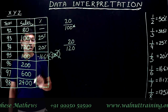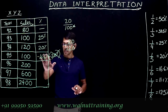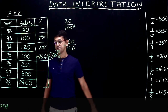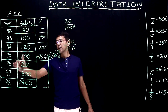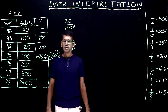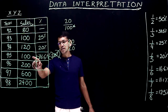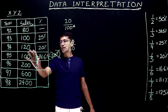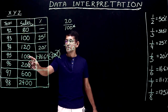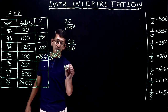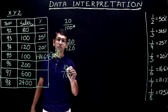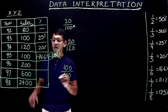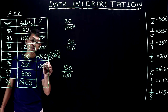Since it is a decrease, we put a negative sign or put it in brackets. From 95 to 96, 100 became 200 — the figure is doubled. The actual increase is 100, and the base figure is 100. So 100 by 100 is 1, multiplied by 100 gives 100 percentage increase.